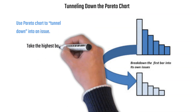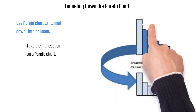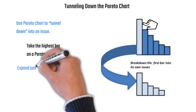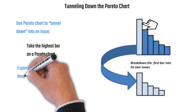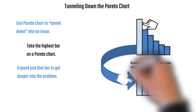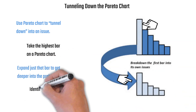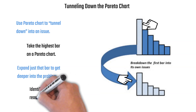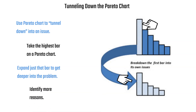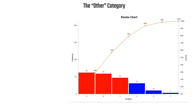You can use the Pareto chart to tunnel down further into an issue. For example, take the highest bar — such as hands and arms injuries — and create a new Pareto chart expanding just that bar to show the reasons specifically for hands and arms injuries.